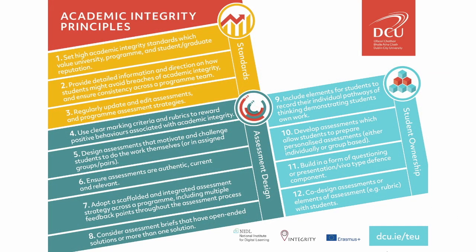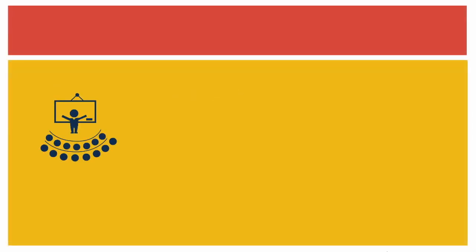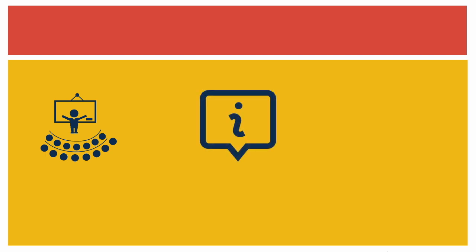Students will be empowered to maintain high academic integrity standards if they are given information and direction on how to do so. Students need to know practical information about academic integrity at a general programme or module level, but also at a specific assignment level too.